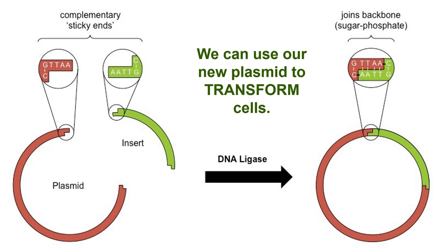This whole process takes place in a test tube, not in a cell. We have DNA from a plasmid that we have cut, creating a nick in the circle of DNA. We have our insert — the target piece of DNA we want to copy or express — and after purifying both, we throw them into a tube and add ligase. Ligase will seal those bits together, especially if we use bits with complementary sticky ends. The simplest approach is to cut both pieces with the same enzyme so the sticky ends match perfectly.